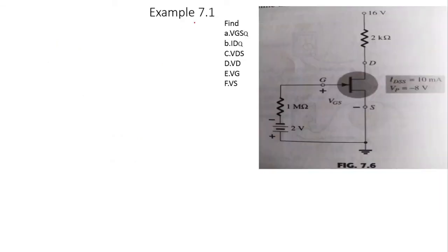We will now do Example 7.1. Given: IDSS = 10 mA, VP = −8 V, and VGG = 2 V. We need to find VGSQ, the drain current IDQ, VDS, VD, VG, and VS.